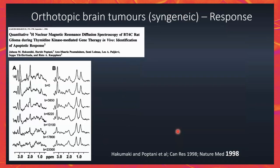What about the orthotopic tumors? This is a study from my postdoc days, where we showed that in a glioma model called BT-4C transfected to express thymidine kinase, treatment with ganciclovir showed a decrease in choline. Moreover, using diffusion-weighted spectroscopy, the diffusion of choline was also reduced. The reason is that cell death was apoptotic — in apoptosis, cells shrink, and if cells are shrinking, diffusion goes down.